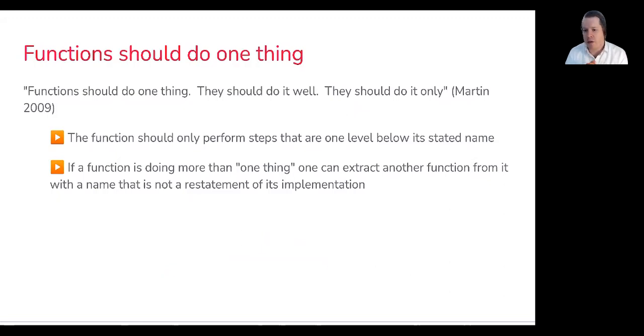So if a function is doing more than one thing, you really need to extract another function from it with a name that is not a restatement of its implementation. So pulling it out and going, okay, I had this sequence of steps to drive the car, which was like put key in ignition, turn key, wait until the engine turns over, release, et cetera. That could be in the function turn on car. And then the sequence of steps that define what that process is would be within the body of that function.